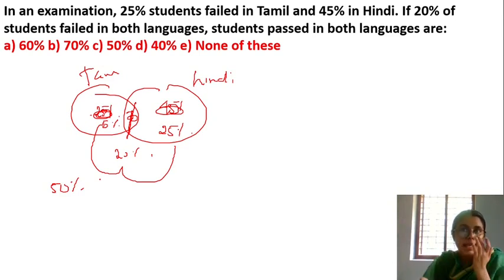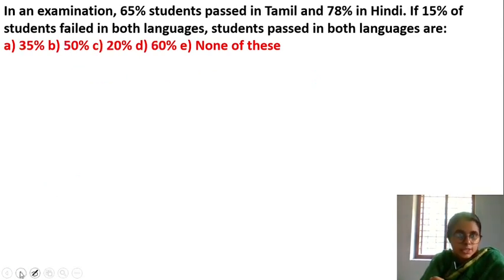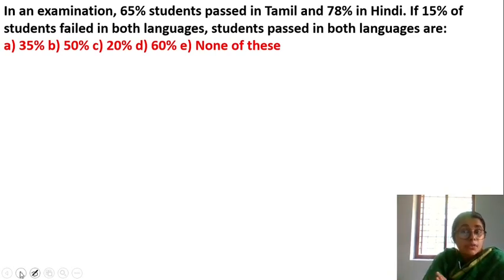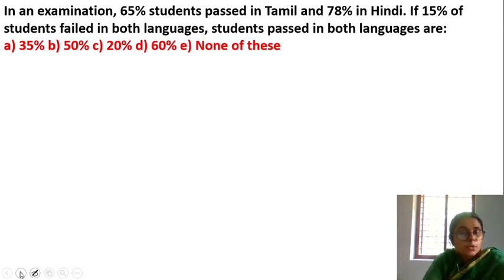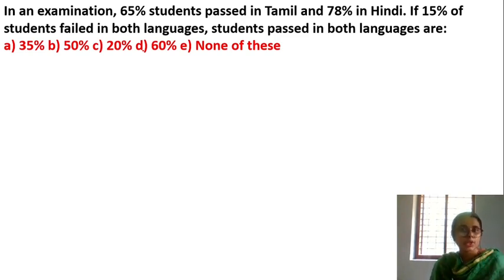Another question: 65% passed in Tamil and 78% passed in Hindi. If 15% of the students failed in both languages, find the percentage of students who passed in both languages. Tamil passed is 60%, Hindi passed is 78%.